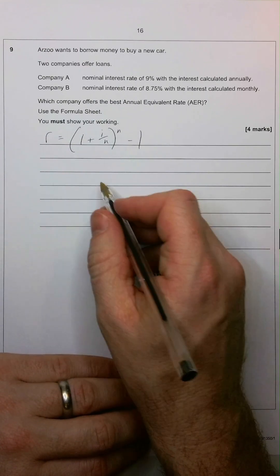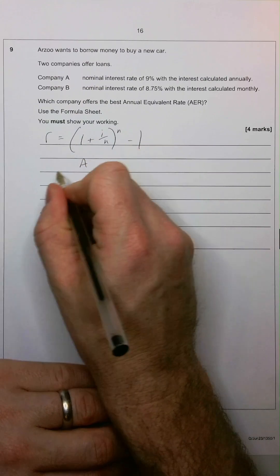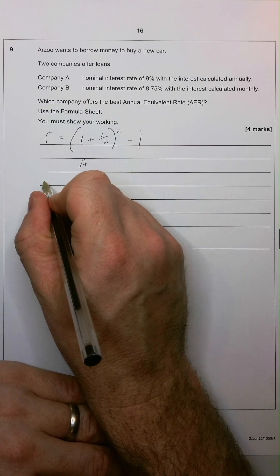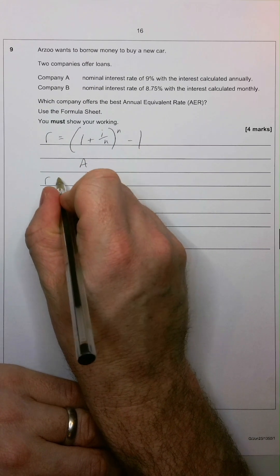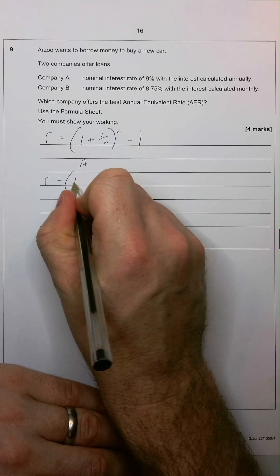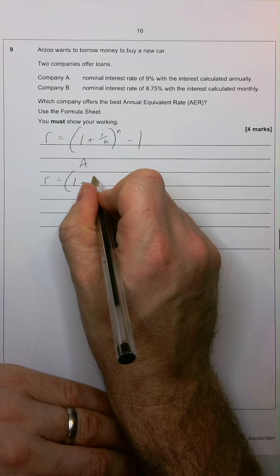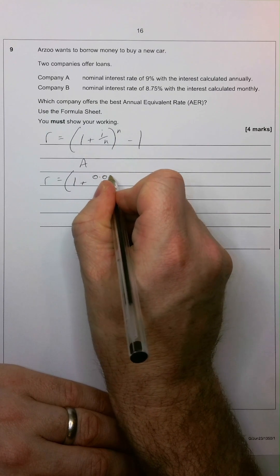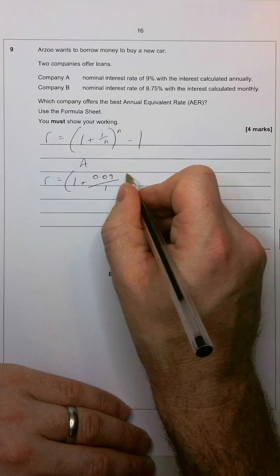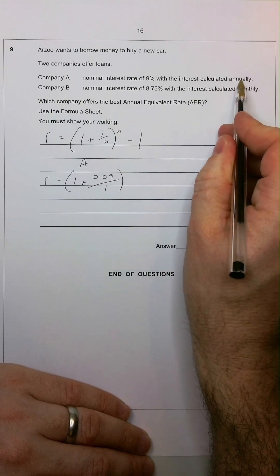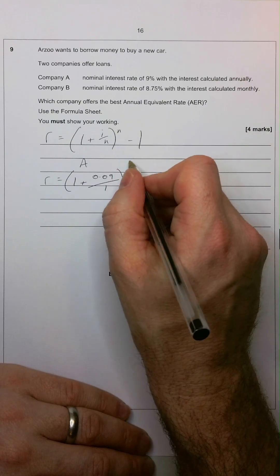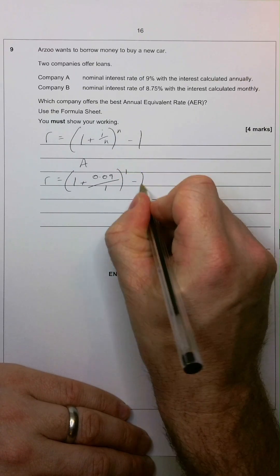So we can do, firstly, we'll do Company A. We'll type it into our calculator. We're going to do 1 plus, remember, as a decimal, 0.09 divided by 1. Now, how many times is interest calculated? It's just 1, and then we take away the 1.